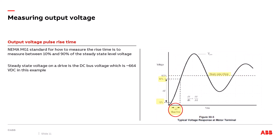Besides peak voltage, we can also measure rise time — how long it takes for the transistor to turn on. Before showing this on an oscilloscope, let's cover the standard for measuring rise time, as it's not obvious. The image on the right is from the MG1 Part 31 standard for motors, which details exactly how to measure IGBT rise time for a VFD running a motor. Rise time is measured as the time between 10% and 90% of the steady-state voltage, which is the DC bus voltage of the VFD.